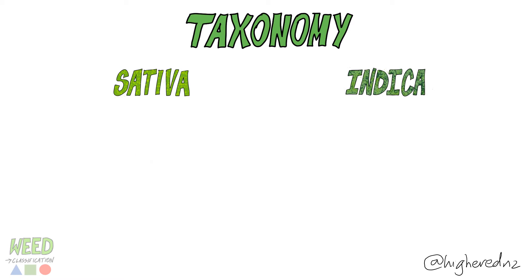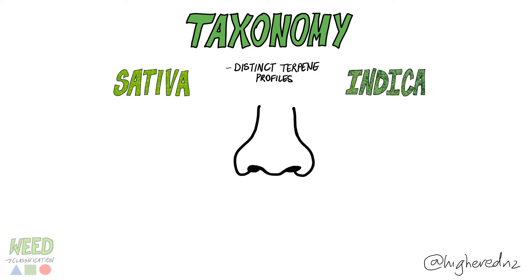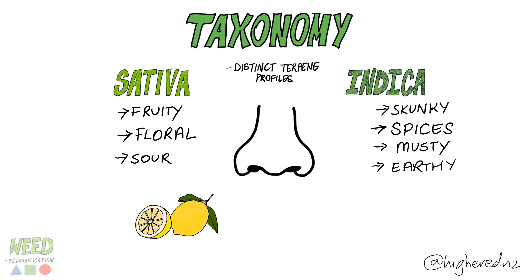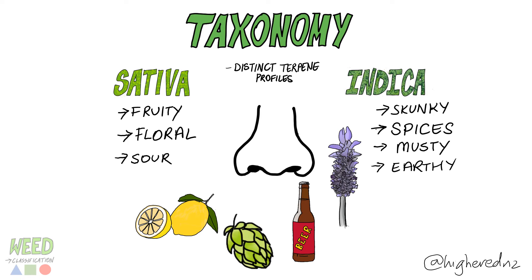Coming to some phytochemical differences, sativa and indica have distinct terpene profiles — in other words, they smell different. Sativa can smell fruity, floral, or sour, while indica can be skunky, spicy, musty, and earthy. These differences are thanks to variations in terpenoids, which we'll discuss later on.